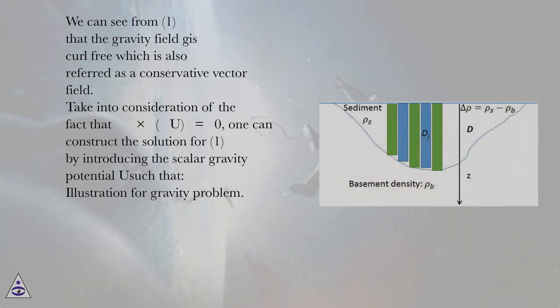Take into consideration of the fact that ∇×(∇u) = 0, one can construct the solution for (1) by introducing the scalar gravity potential u such that. Illustration for gravity problem.